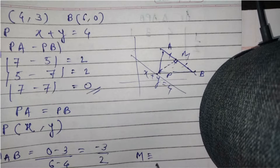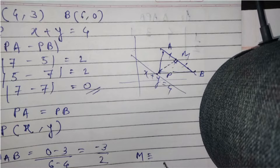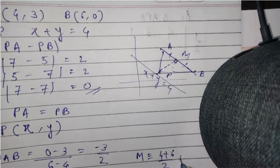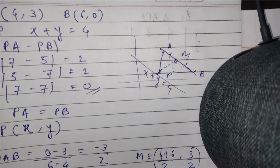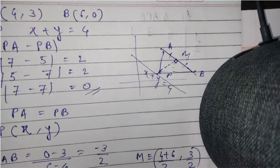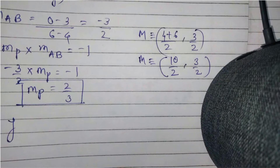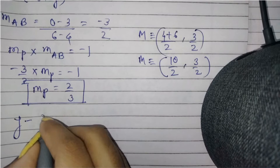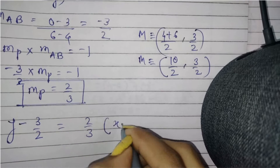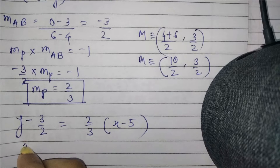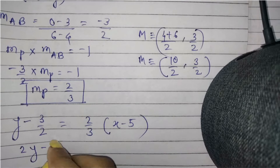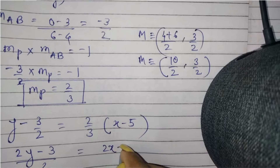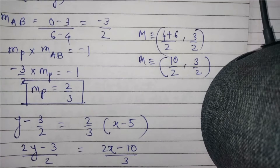The midpoint of A and B will lie on this perpendicular. Let M be the midpoint of AB. Using coordinates of A and B: midpoint = ((x1+x2)/2, (y1+y2)/2) = ((4+6)/2, (3+0)/2) = (5, 3/2). Substituting that point, the equation of the perpendicular bisector is: y - 3/2 = (2/3)(x - 5), which gives 2y - 3/2 = (2x - 10)/3, and multiplying through: 3(2y - 3) = 4x - 20.